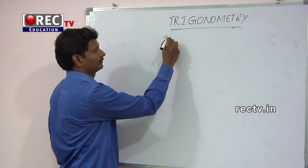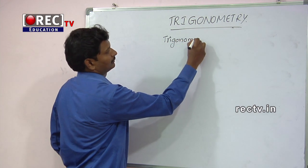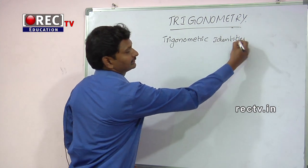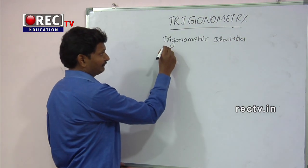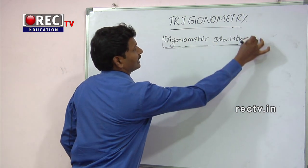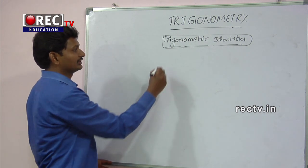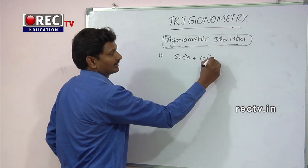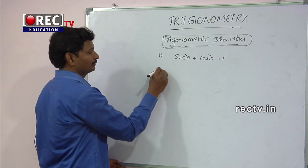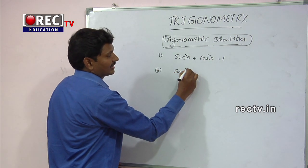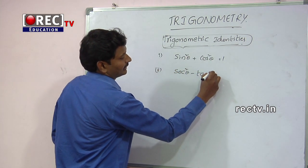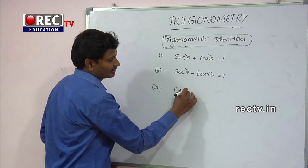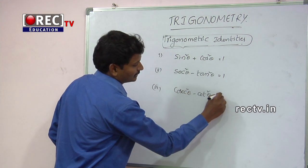Trigonometric identities. We have three trigonometric identities, which we use every day in trigonometry — very important concepts. The first identity is sin squared theta plus cos squared theta equals 1. The second identity: secant squared theta minus tan squared theta equals 1. The third identity: cosecant squared theta minus cot squared theta equals 1.